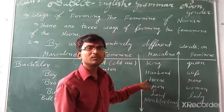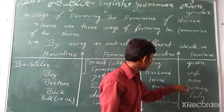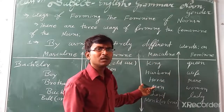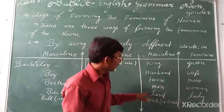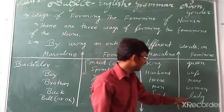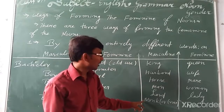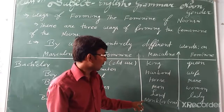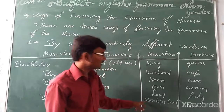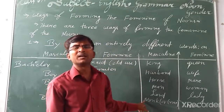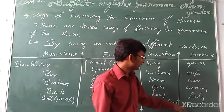'Horse' — the feminine gender is 'mare'. 'Man' — in Hindi, kumara. 'Lord' — the feminine gender is 'lady'. The Hindi meaning of 'monkey' is 'bandar' or 'bijhu', and the feminine gender of monkey is 'none' — meaning 'bijhu ki'.